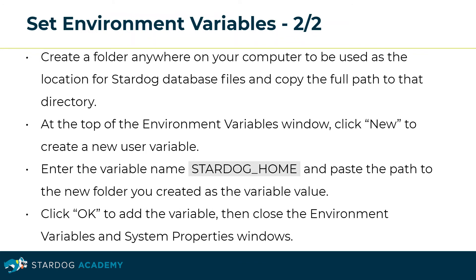Next, create a folder anywhere on your computer to be used as the location for Stardog database files and copy the full path to that directory. At the top of the environment variables window, click New to create a new user variable. Enter the variable name STARDOG_HOME and paste the path to the new folder you created as the variable value. Click OK to add the variable, then close the environment variables and system properties windows. This concludes the section about installation on Windows.